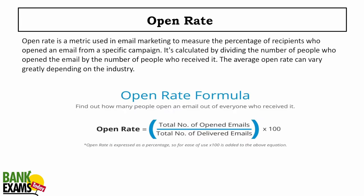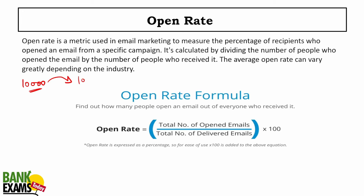Open rate: if I send emails to 10,000 students and only 1,000 students opened that email, the open rate is 10%. The formula is: number of opened emails divided by number of delivered emails multiplied by 100.